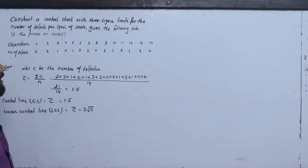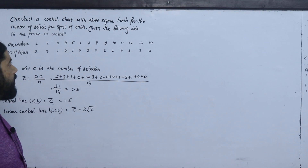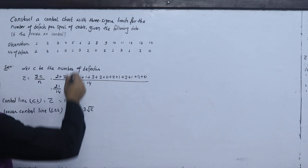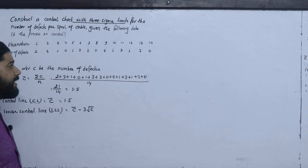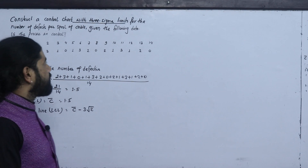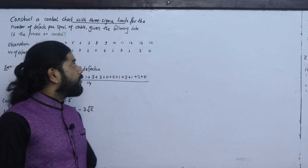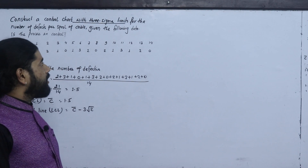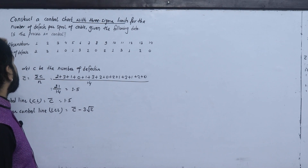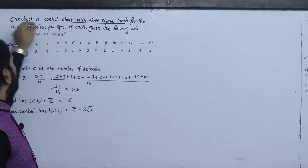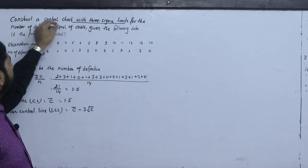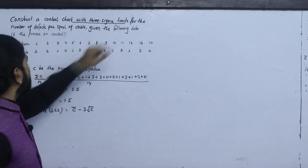Per spool of cable, given the following data, each process is in control with 3-sigma limits. This is the C chart for the number of defects. Construct a control chart with 3-sigma limits.